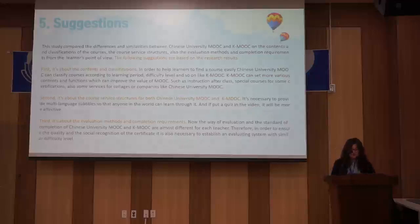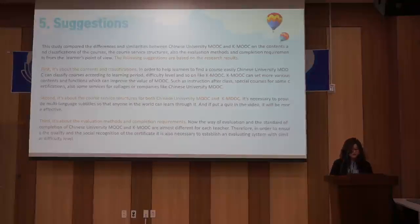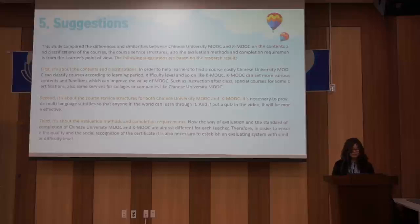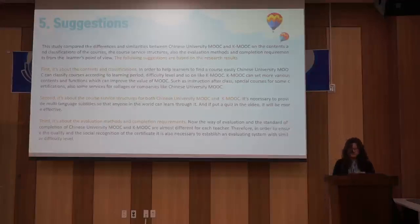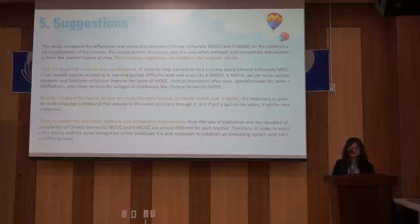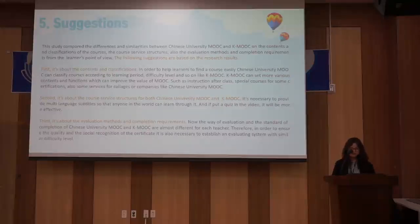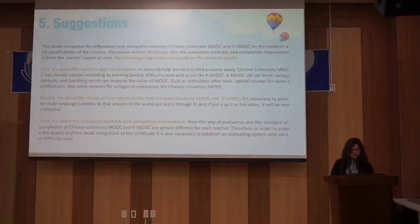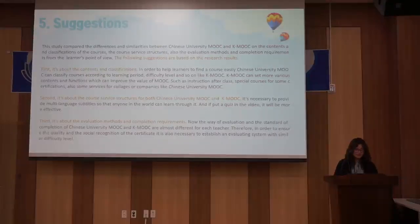The following suggestions are based on the research results. First, in order to help learners find courses easily, Chinese University MOOC can add classification by learning period and difficulty level, while KMOOC can set various content and functions to improve its value, such as special courses for certificates. Second, for both platforms it is necessary to provide multi-language subtitles so that people worldwide can learn through them. Third, in order to ensure the quality and social recognition of the certificate, it is necessary to establish an evaluation system with a more consistent difficulty level.